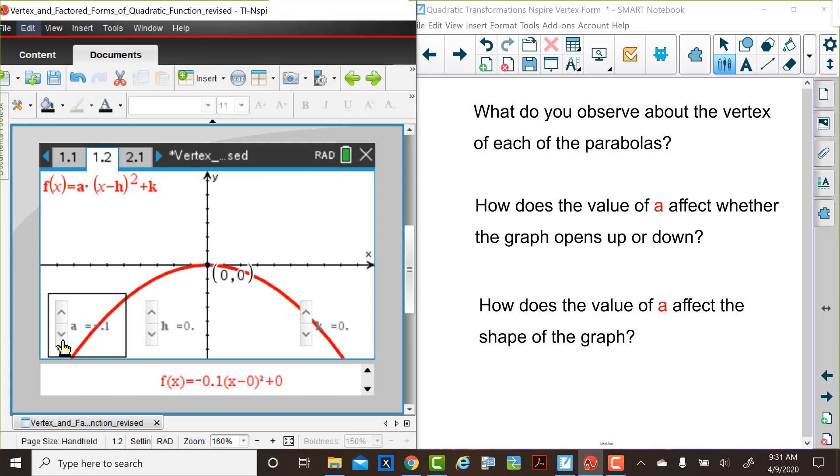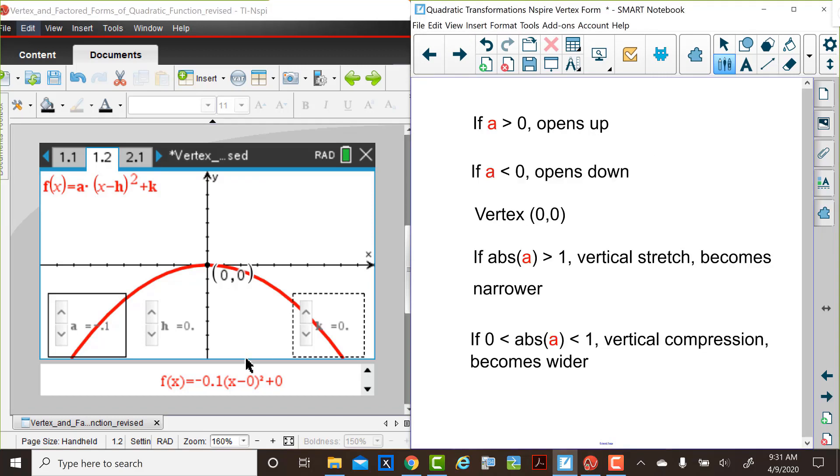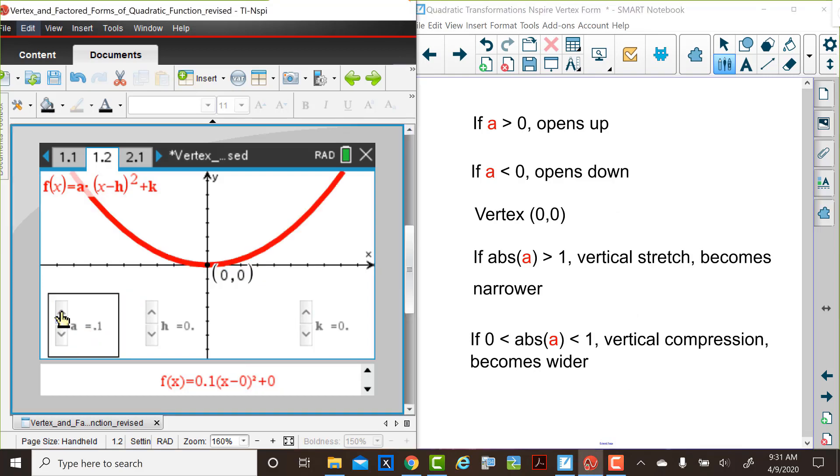Let's summarize these effects. As you may have noted, whenever the a value is greater than 0, the graph opened up. When the a value is less than 0, the graph of the parabola opens down. The vertex of each of these graphs is at (0, 0).